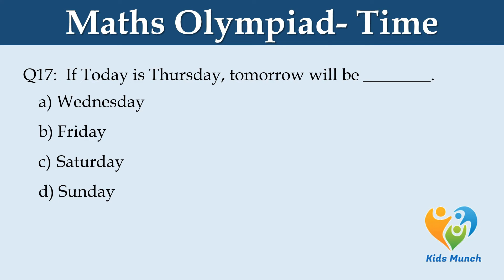If today is Thursday, tomorrow will be dash. Option A: Wednesday. Option B: Friday. Option C: Saturday. Option D: Sunday.